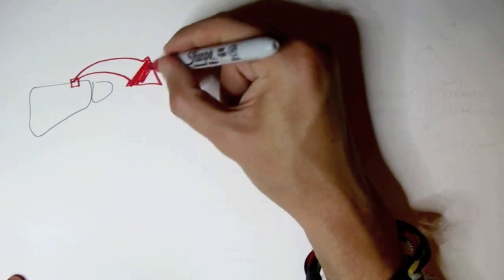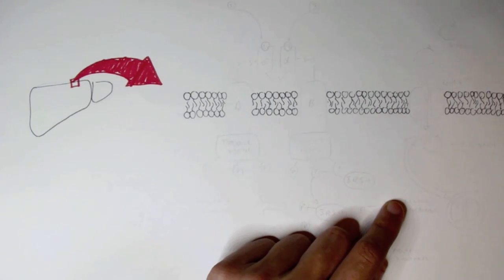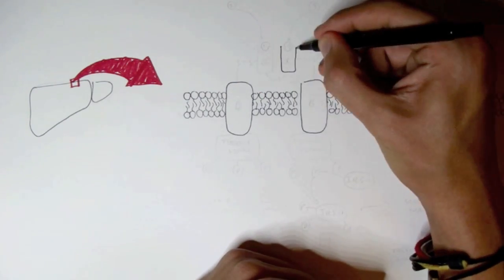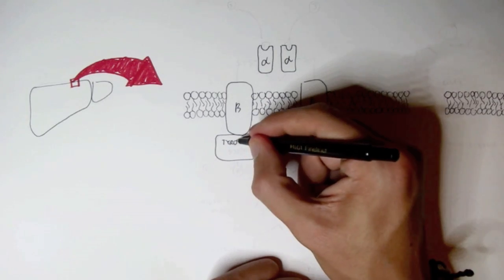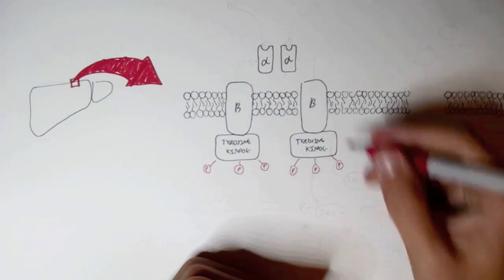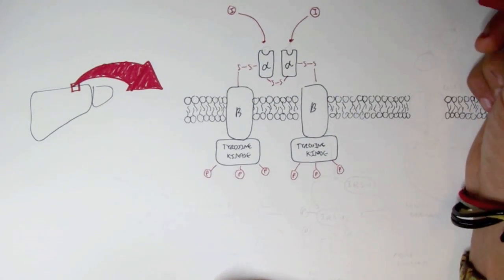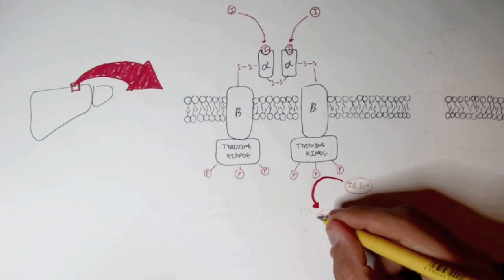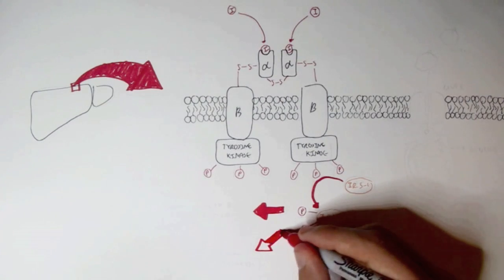Let's look at a cross section of a hepatocyte cell membrane. The insulin receptor — a tyrosine kinase receptor — consists of 2 alpha subunits, 2 beta subunits, and 2 intracellular tyrosine kinase enzymes bound to the beta subunits on the inner membrane. Tyrosine kinase is autophosphorylated and contains many phosphate groups. The alpha-beta and alpha-alpha subunits are connected by disulfide bonds. Once two insulins bind to the alpha subunits, an inner membrane protein known as IRS1 becomes phosphorylated and activated.